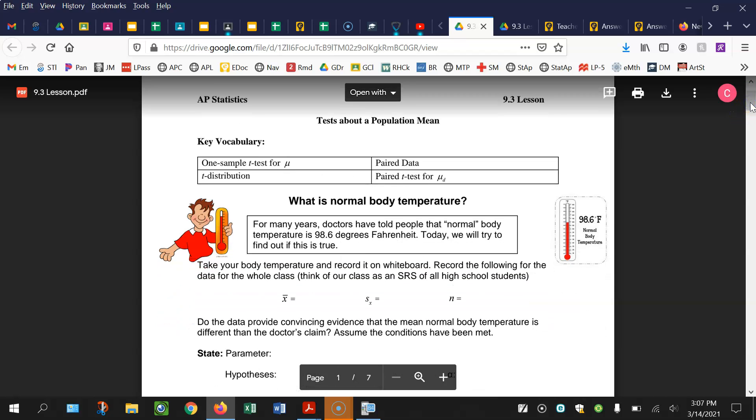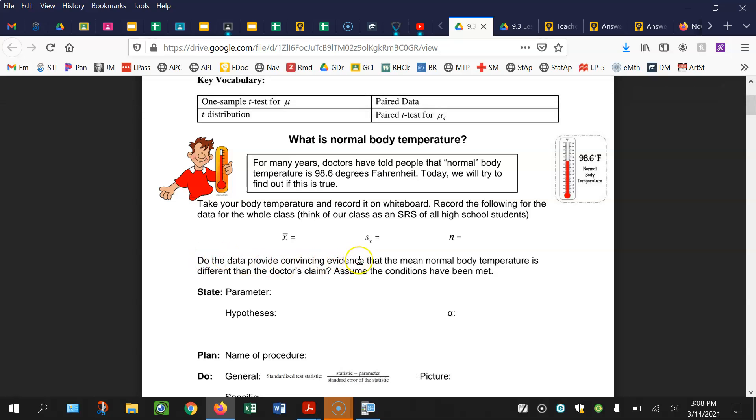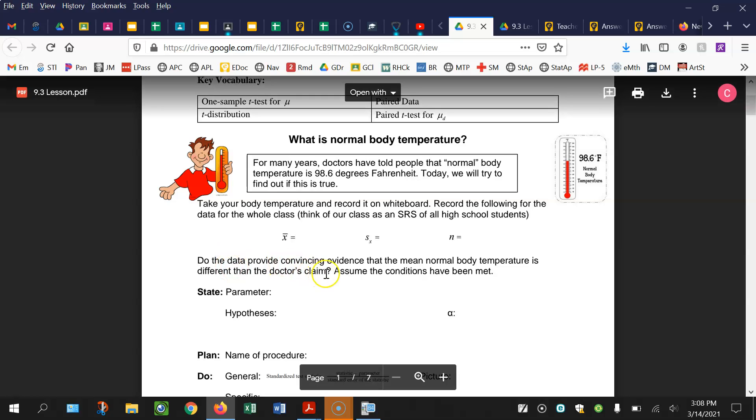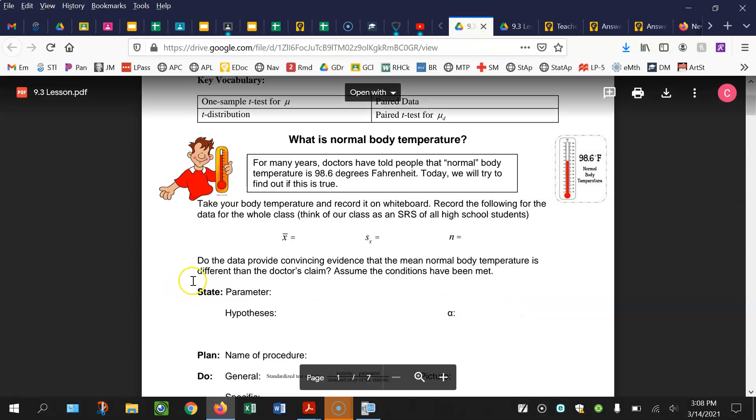So for this question, for many years doctors have told people that normal body temperature is 98.6 degrees Fahrenheit. Today we'll try to find out if this is true. Do the data provide convincing evidence that the mean normal body temperature is different than the doctor's claim? So what you can do right now is list out the parameter with the correct symbol and words, the hypotheses, and the significance level. Pause the video and work through that state step right now.